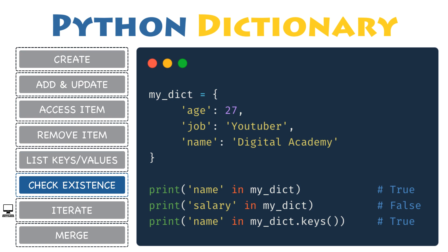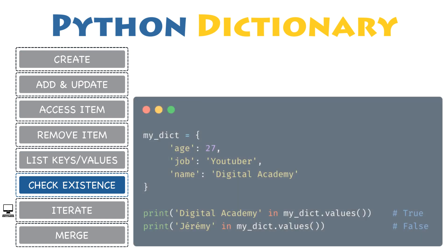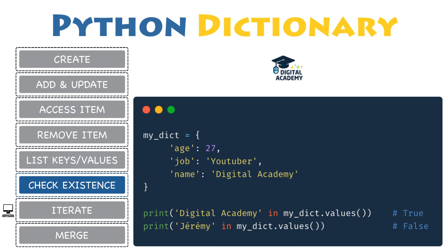If you want to check whether the key 'name' is part of this dictionary, type 'name in my_dict', which will return the boolean value True, since 'name' is present inside the dictionary's keys. Another way is to explicitly use the keys() function. Testing whether 'salary' is present will return False, since salary is not inside the dictionary's keys. And this is exactly the same when you want to check if a value is inside the dictionary, except that you use the values() function.